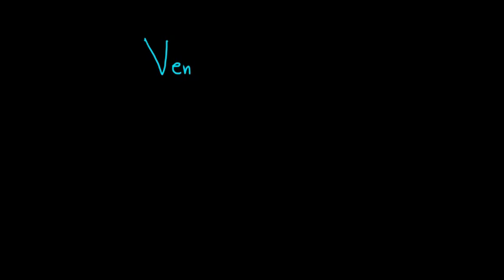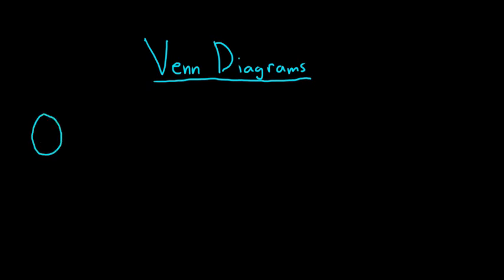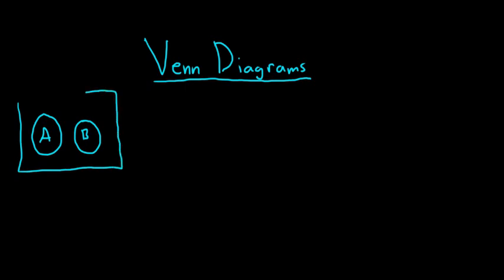Let's continue our discussion of sets. Venn diagrams are a way to graphically look at sets. We'll talk about three different cases. Here we have A and B inside a rectangle, and this rectangle represents the universe of discourse or the universal set — that's everything we care about. A and B are always subsets of this rectangle, so they're inside the rectangle.